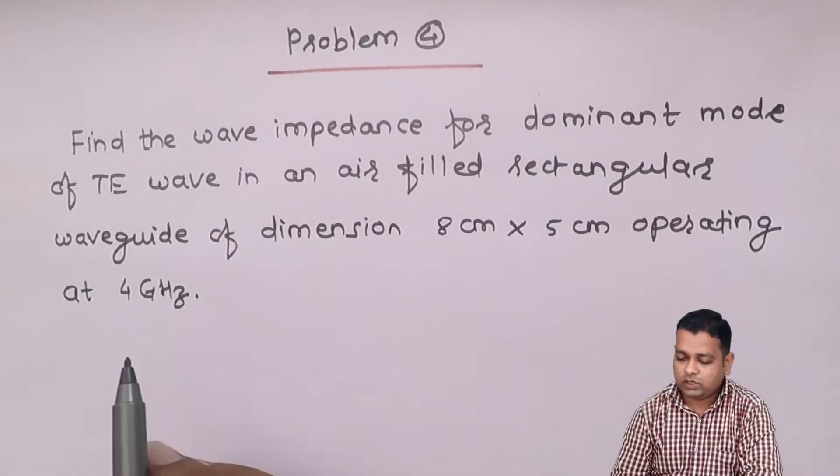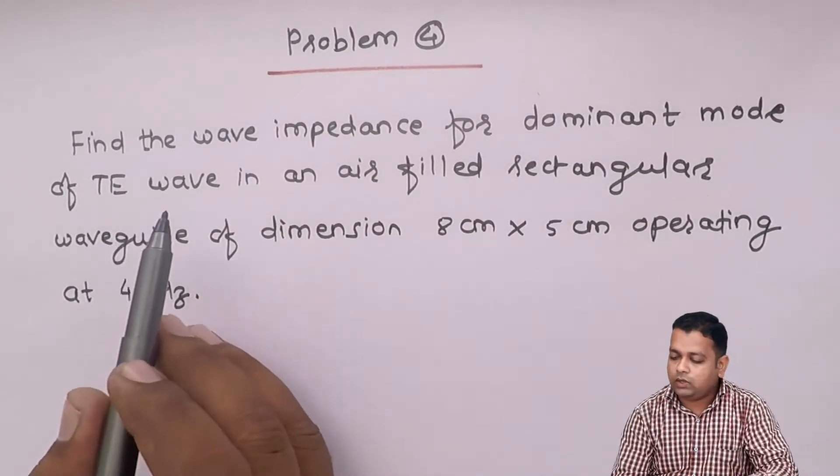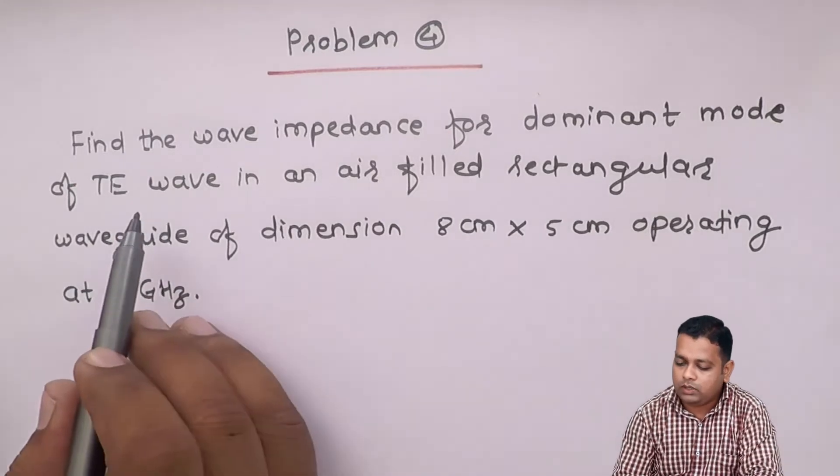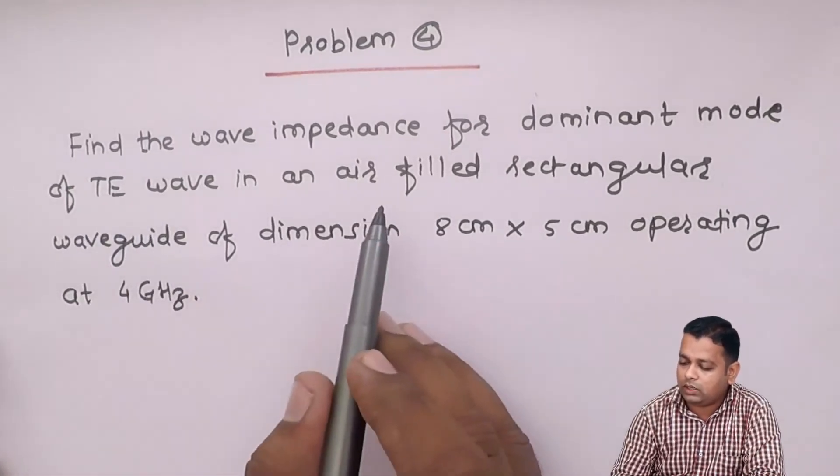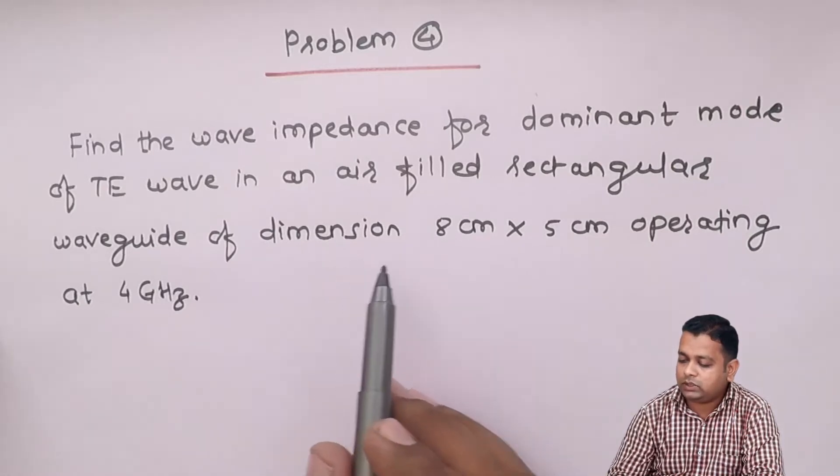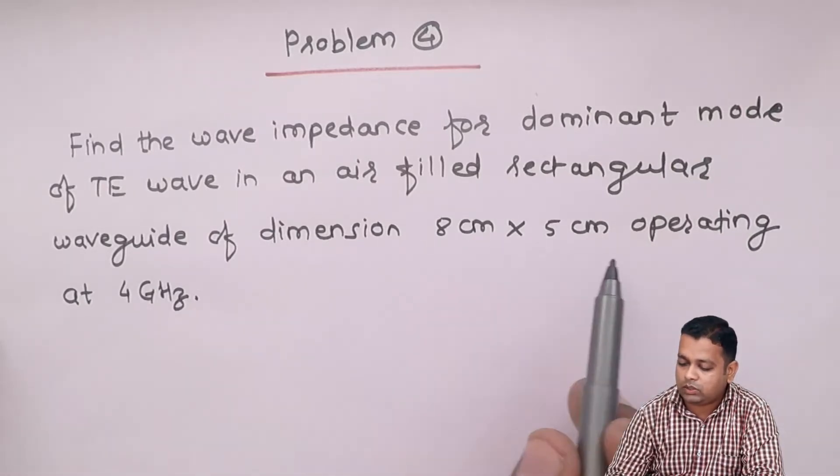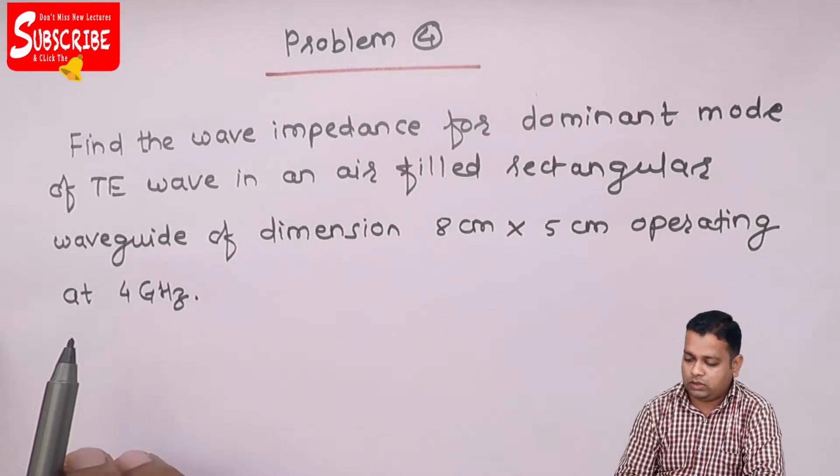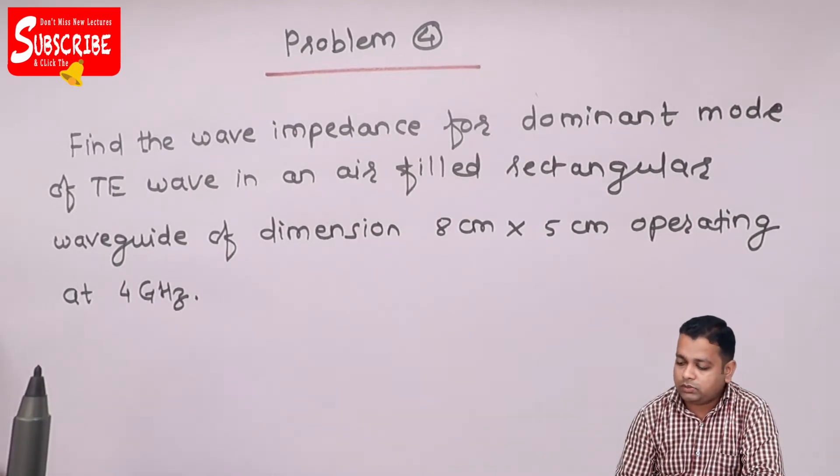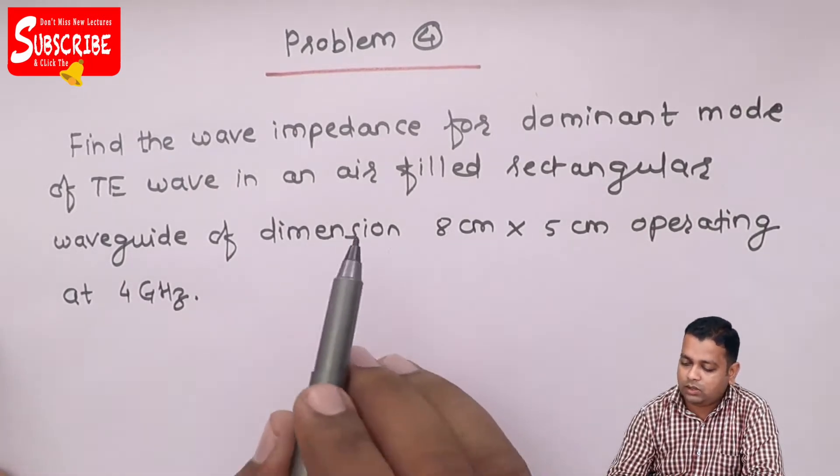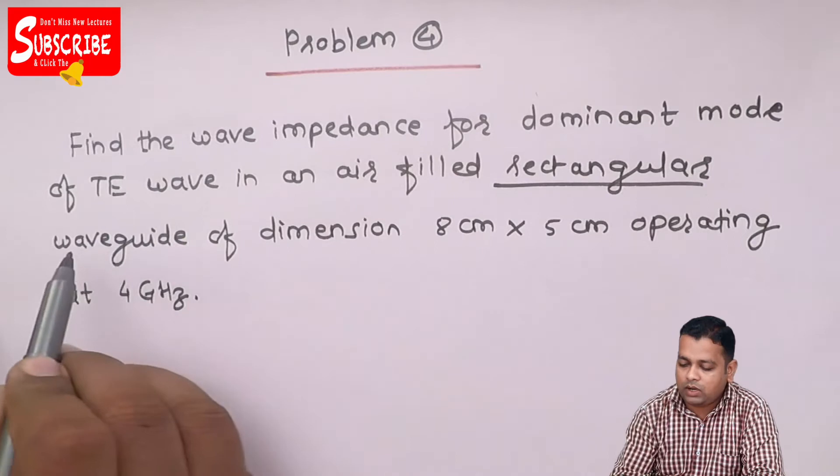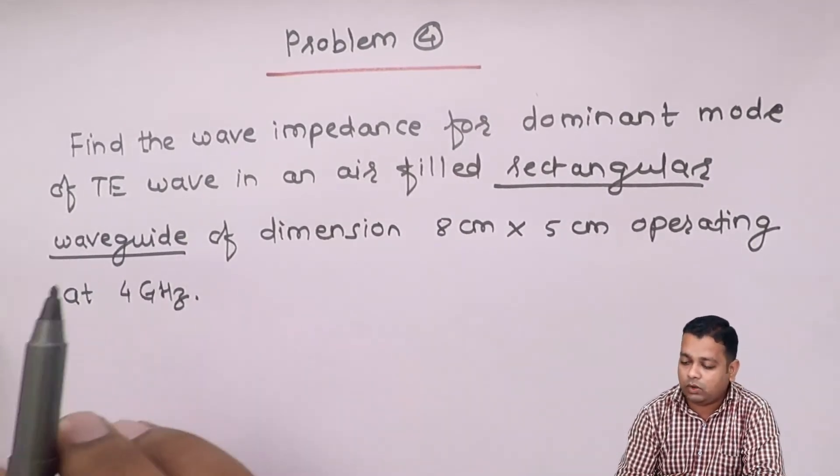So this is the problem statement. Find the wave impedance for dominant mode of TE wave in an air-filled rectangular waveguide of dimension 8 centimeter by 5 centimeter operating at 4 gigahertz. In this problem statement, we know that it is a rectangular waveguide, a hollow metallic tube filled up with air.